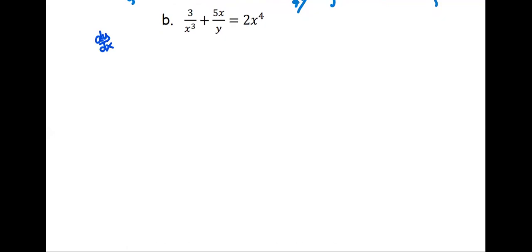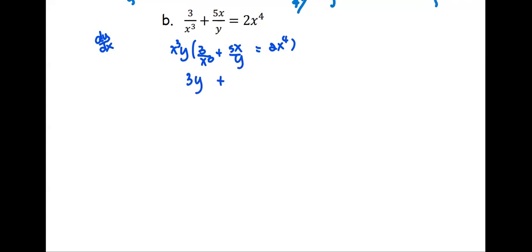For our convenience, we are going to clean up the equation and simplify into a form with no denominators. So we multiply all terms by x to the third times y. The new equation becomes 3y plus 5x to the third equals 2x to the seventh times y.